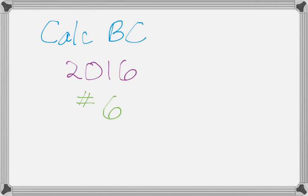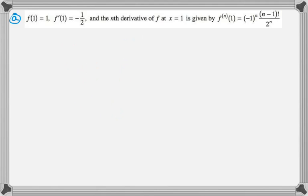In this video we're going to talk about number 6 on the 2016 Calc BC exam, and it's the series question, which we were probably looking forward to. So we're given quite a bit of information. We're told that f(1) = 1, f'(1) = -1/2, and the nth derivatives for n ≥ 2 at x = 1 are given by this formula.